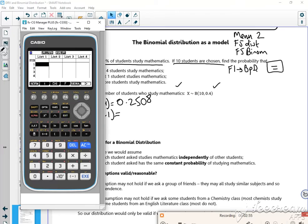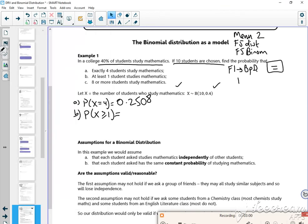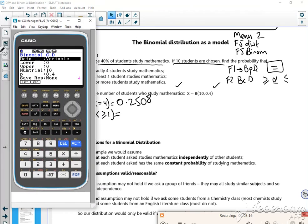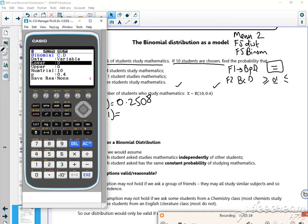So I have to do f5 for distribution, f5 for binomial, and bcd. So bcd, which is f2, is for greater than or equal to, or less than or equal to. And I just set the limits on it, the edges. Because it's between 0 and 10. So I wanted greater than or equal to 1. So my lower is 1, my upper is 10, my num trials is 10, and my p is 0.4.